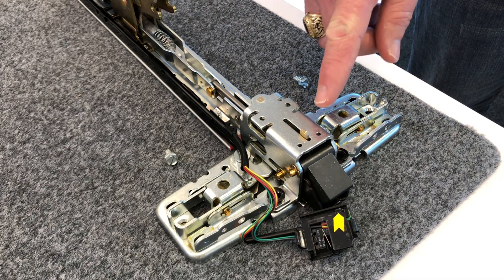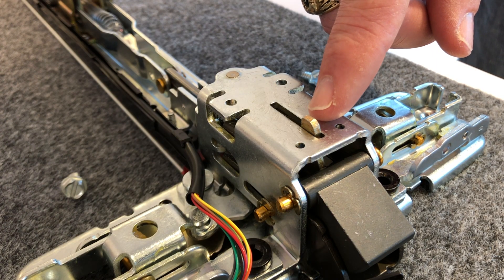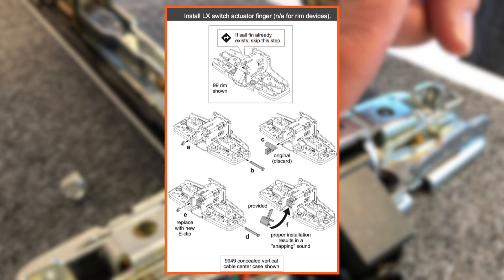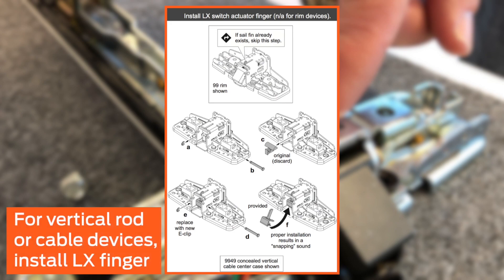For rim exit devices, the sail fin will already be in place. If your device uses a surface vertical rod or a concealed vertical rod or cable, see the instruction sheet to install the LX switch actuator finger.